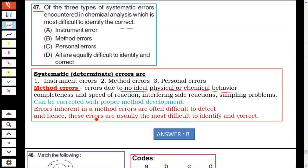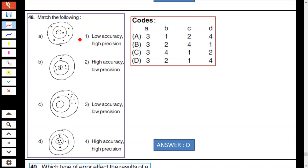Errors inherent in a method are often difficult to detect, and hence these errors are usually most difficult to identify and correct. Instrumental error can be identified easily, personal error can also be identified easily. Hence option B, methodic error, cannot be identified easily because due to following the wrong method. Option B is correct.